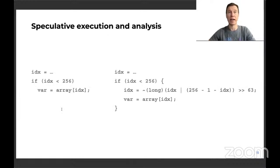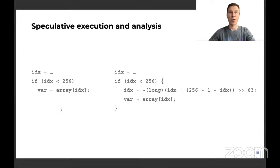Not only does the verifier have to understand all transformations that LLVM did with the C code, it has to detect Spectre-style attacks in malicious BPF programs. Under speculative execution, when the index is slow to load, the index < 256 condition could get mispredicted by the CPU and the array reference will happen out of bounds. The verifier can accurately detect such speculative execution in unprivileged programs and automatically convert them into a masked index. This bit of magic does not prevent speculative execution; instead, it steers speculative execution into a safe range. That's where safety blends into security.